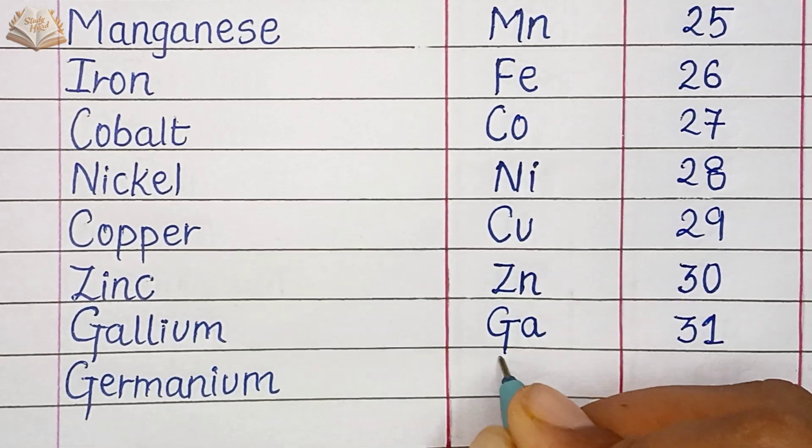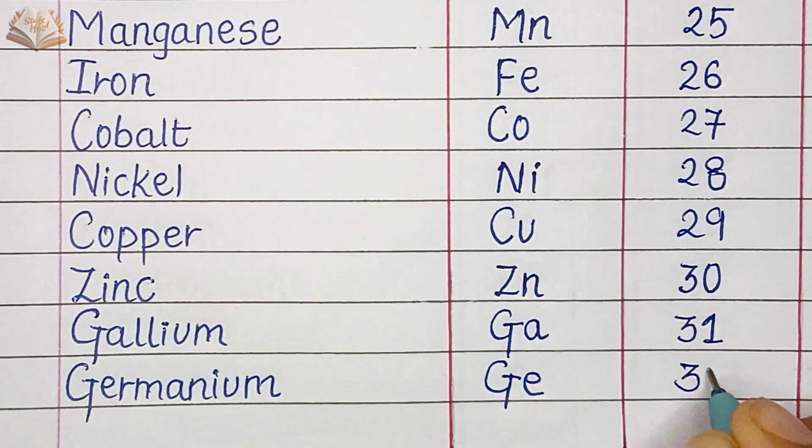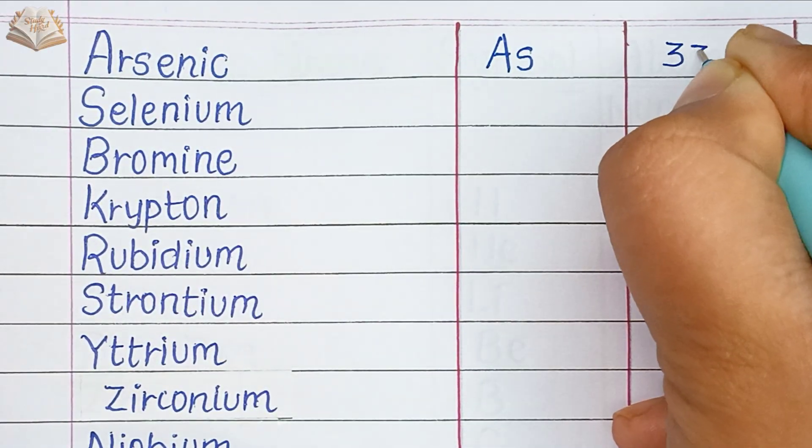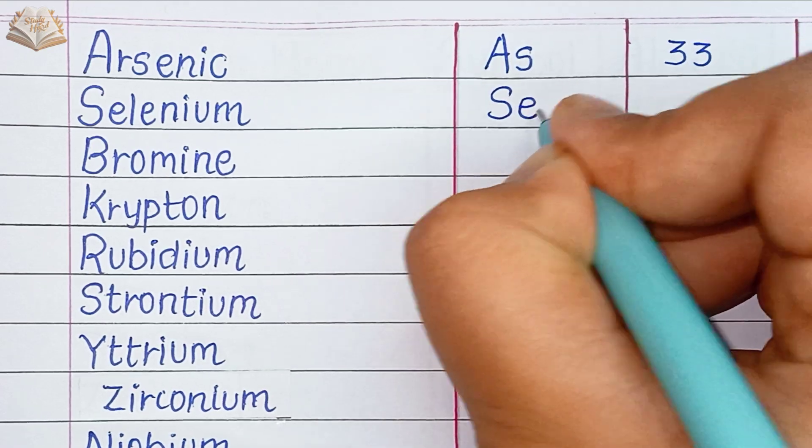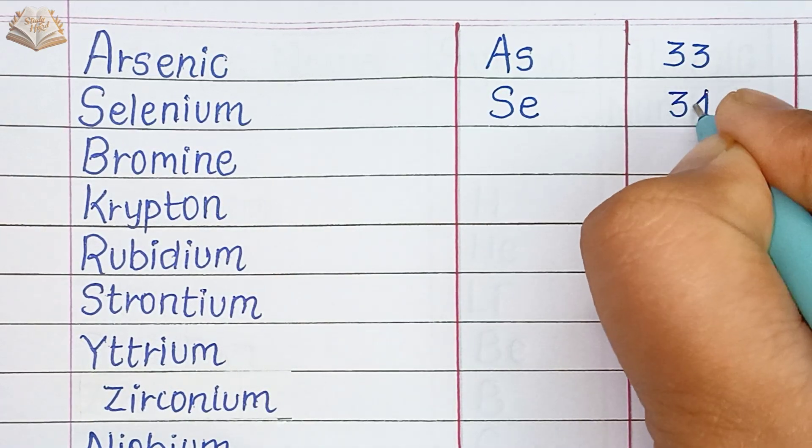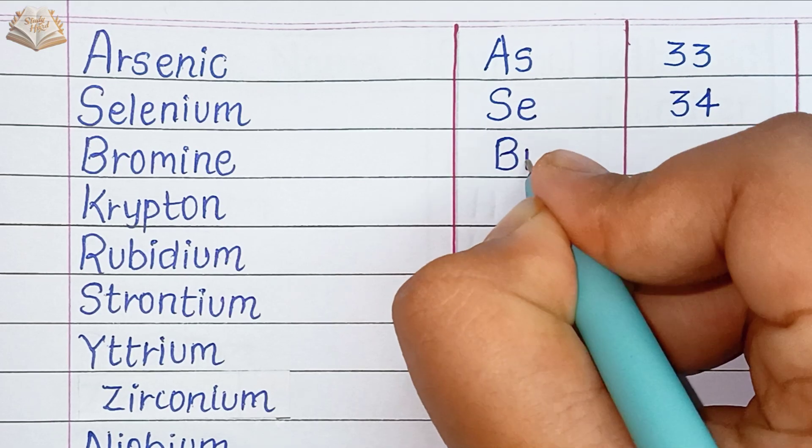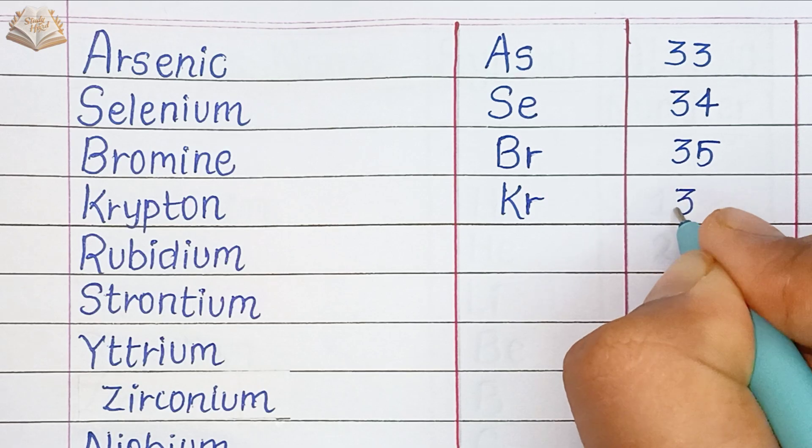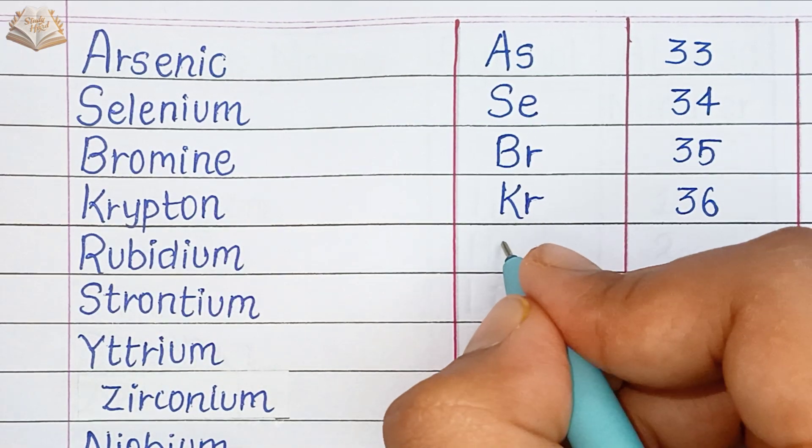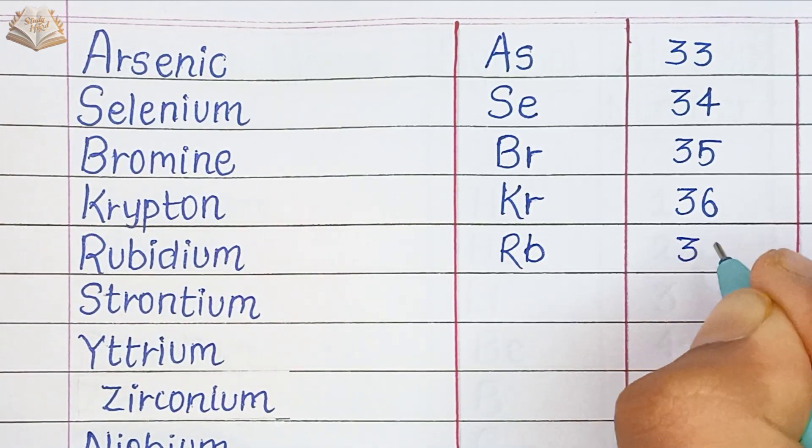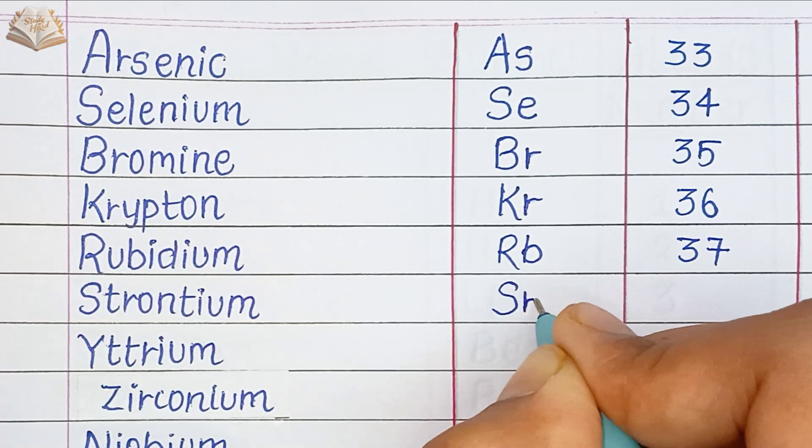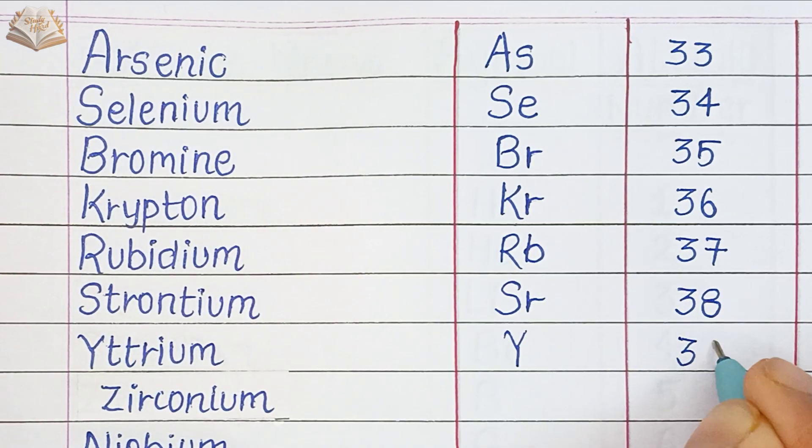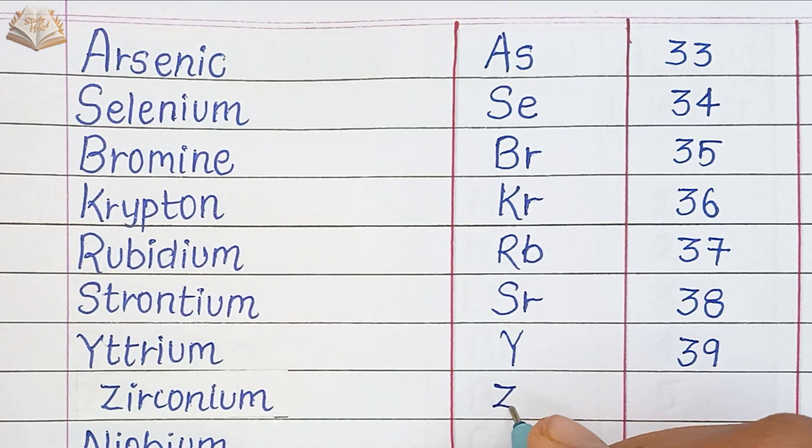Germanium, Ge, atomic number 32. Arsenic, As, atomic number 33. Selenium, Se, atomic number 34. Bromine, Br, atomic number 35. Krypton, Kr, atomic number 36. Rubidium, Rb, atomic number 37. Strontium, Sr, atomic number 38. Yttrium, Y, atomic number 39. Zirconium, Zr, atomic number 40.